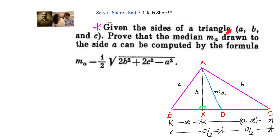Given the sides of a triangle A, B and C, prove that the median MA drawn to side A can be computed by the formula: MA equals half of the square root of 2b² plus 2c² minus a².